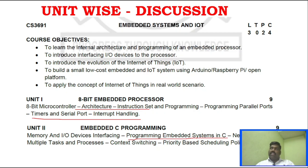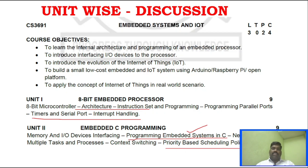Unit 2 covers programming embedded systems in C. In this unit, predefined programs and embedded programming basics are important. Real-time operating systems (RTOS) are a very important topic, and similarly priority-based scheduling policies are key areas in this unit.